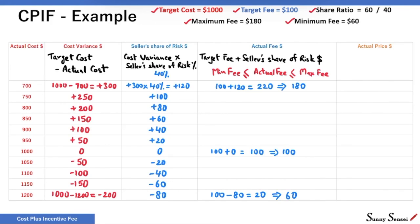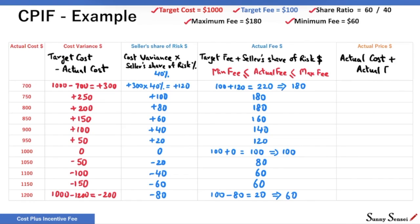Similarly, for other values of actual cost, we populate the remaining cells. Finally, actual price is simply actual cost plus the actual fee. When the actual cost is $700, the actual price is $880. Let us populate the other cells.